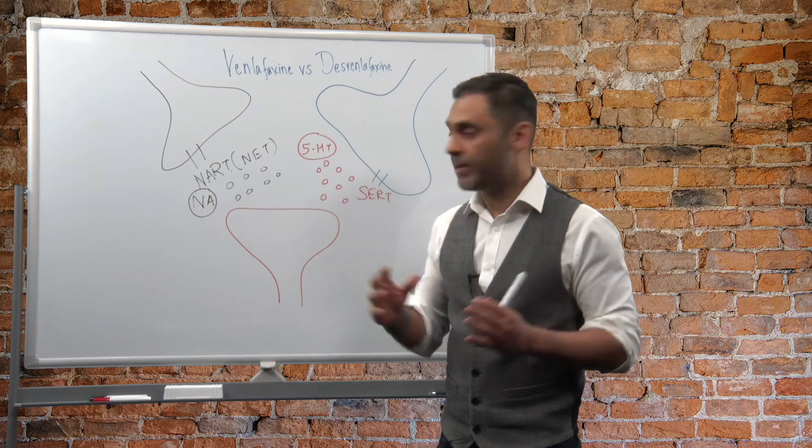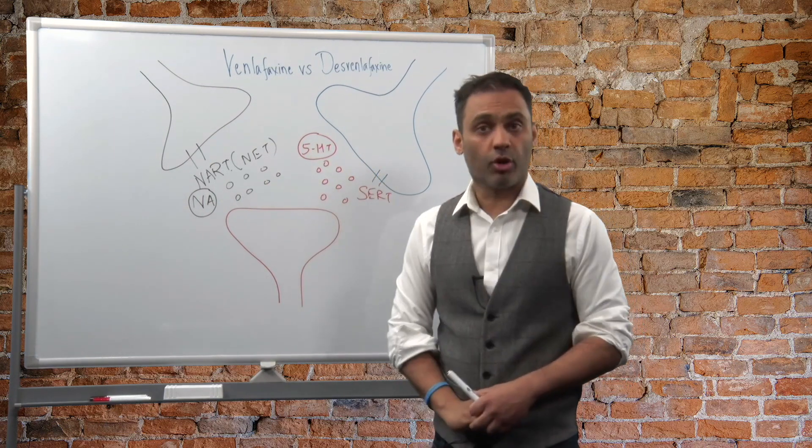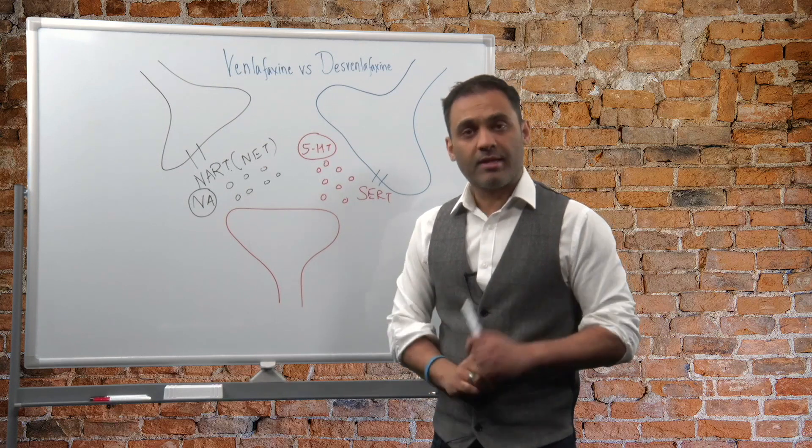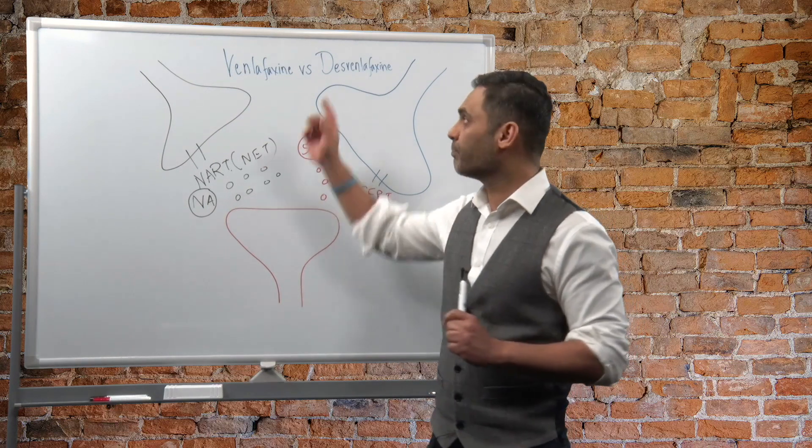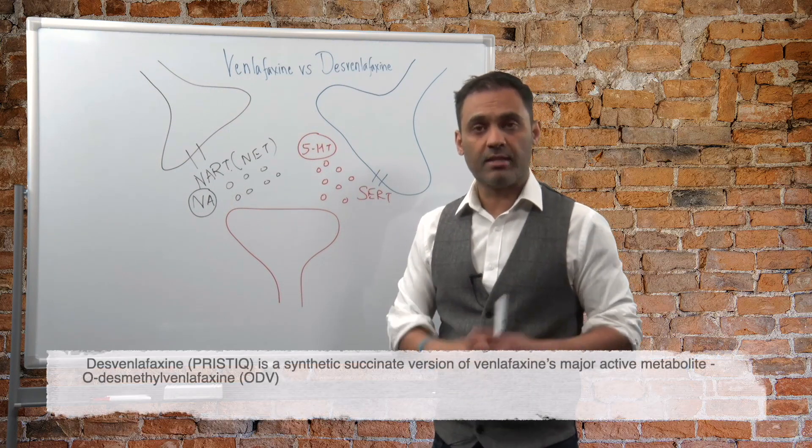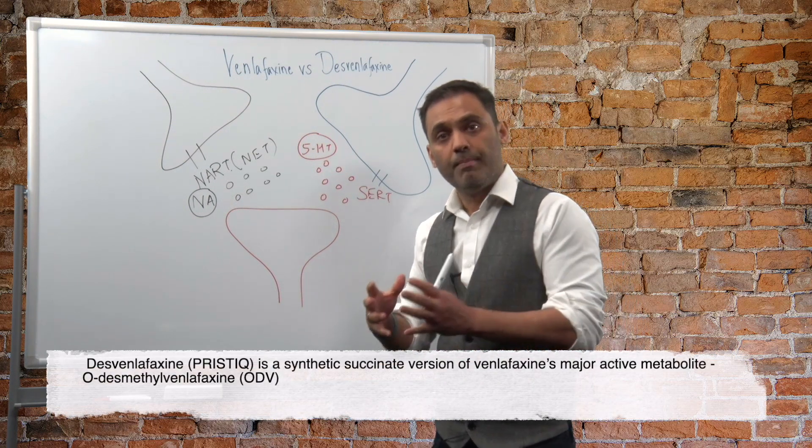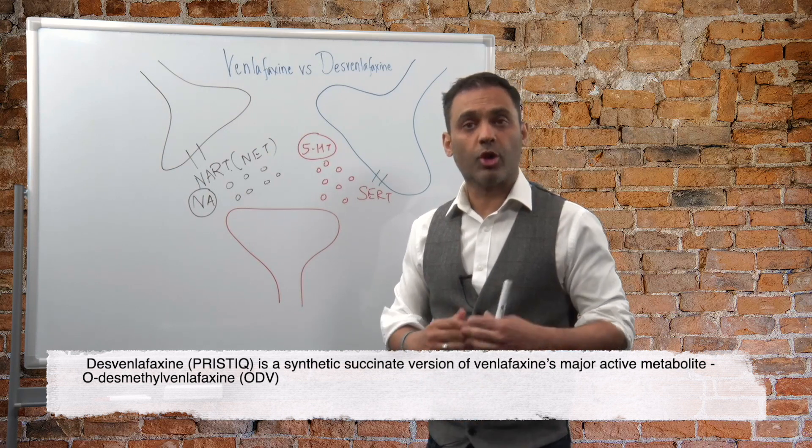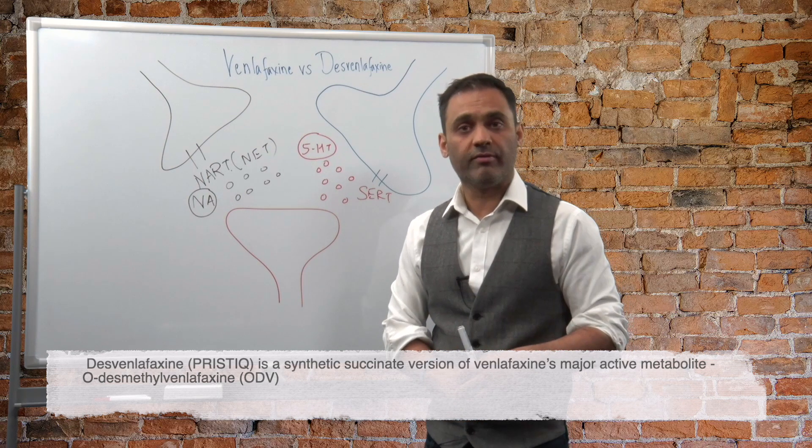So when we think about it you've got serotonin, you've got noradrenaline. But what's different about these two? Desvenlafaxine is nothing but a metabolite of venlafaxine. Venlafaxine is metabolized into what's called ODV, which is O-desmethylvenlafaxine.